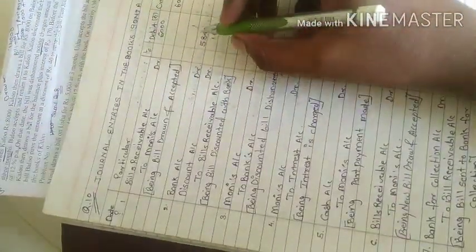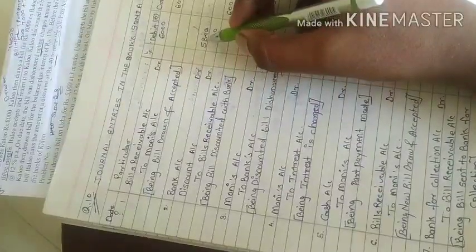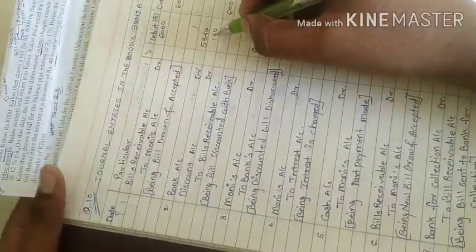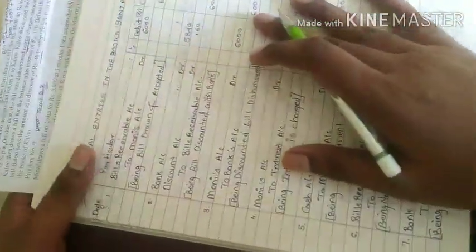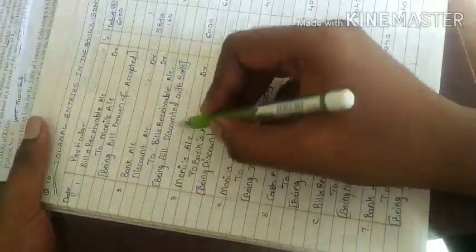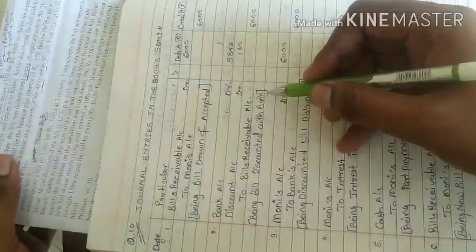So 6,000, so how much bank account, 5,840. 5,840 debit side. Discount account debited. Bill discounted with the bank.